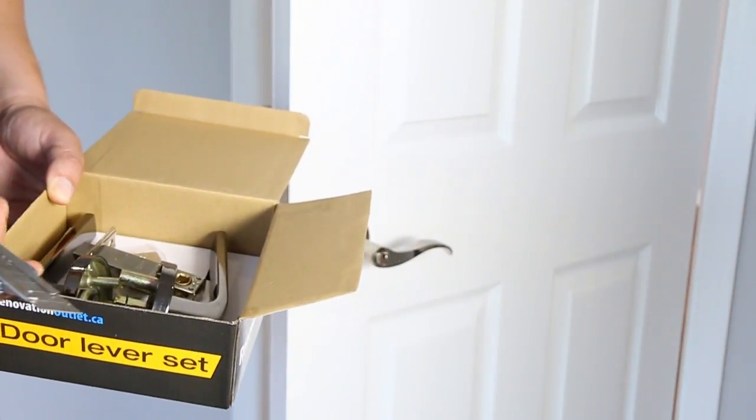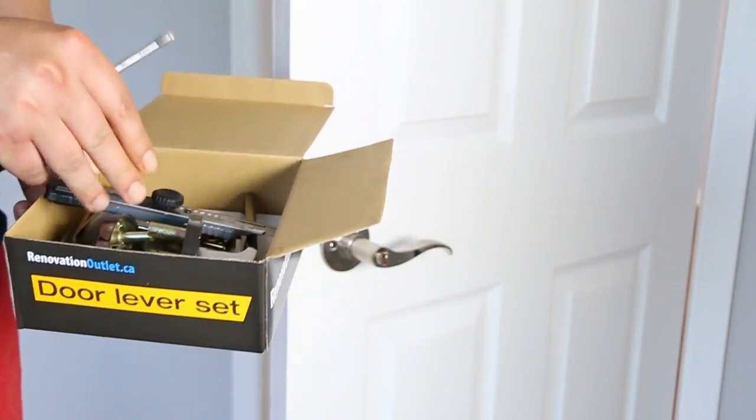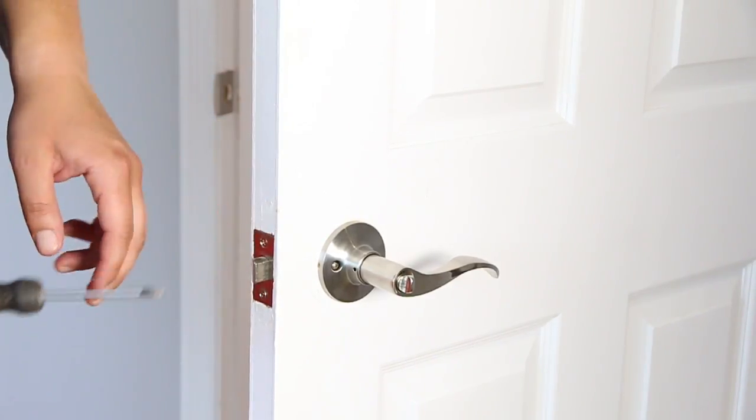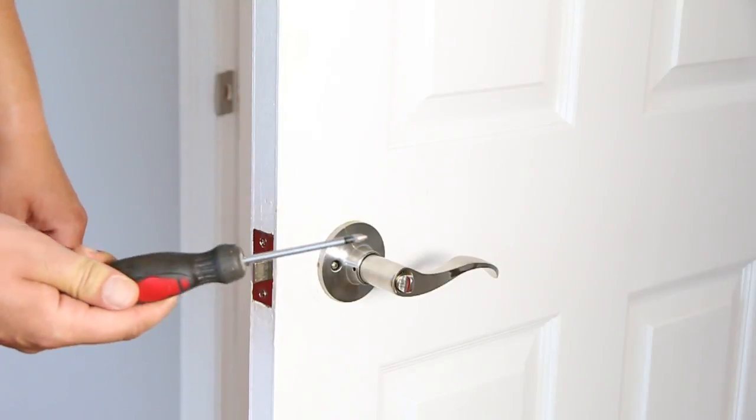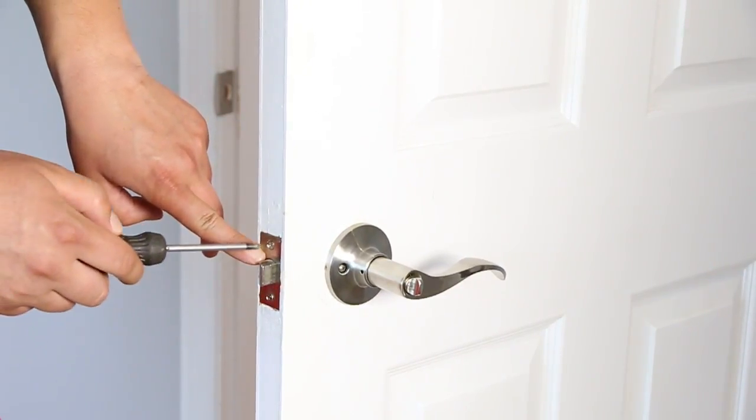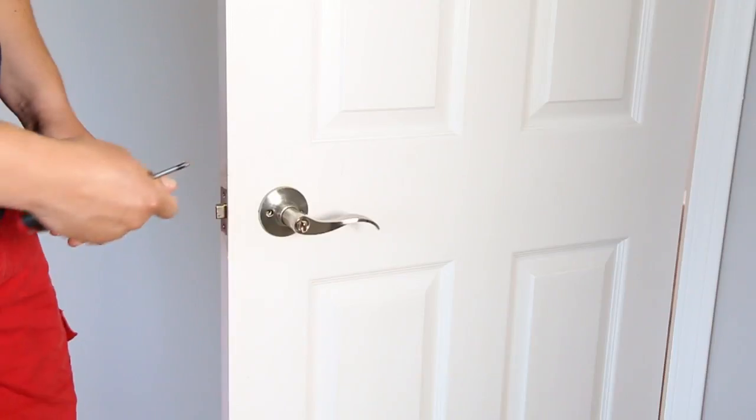To install this handle you're going to need an exacto knife and Phillips screwdriver. Usually your old handles are installed with Phillips screwdriver. Hence we have the Phillips screwdriver. Usually there's two bolts over here or two screws and also on one of the sides of the handle.